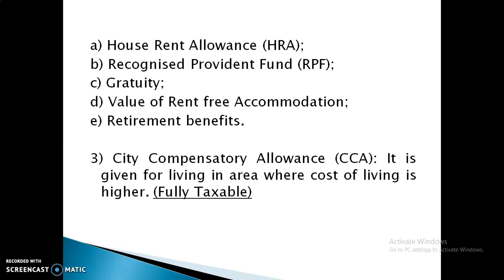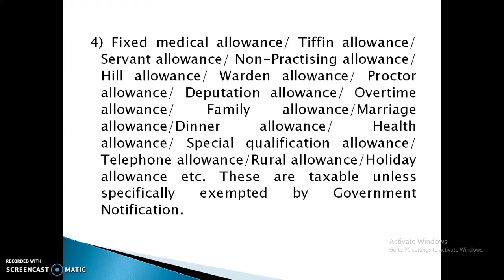Number 3 is city compensatory allowance — it is given for living in an area where the cost of living is higher. Similarly, fixed medical allowance, tiffin allowance, servant allowance, non-practising allowance, hill allowance, warden allowance, proctor allowance, deputation allowance, and overtime allowance are also fully taxable.